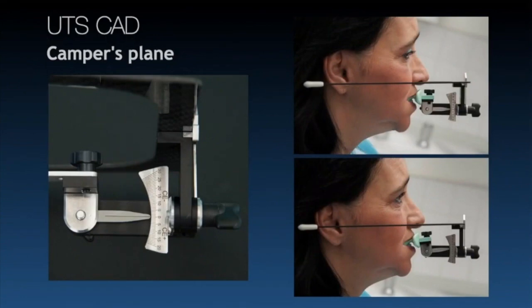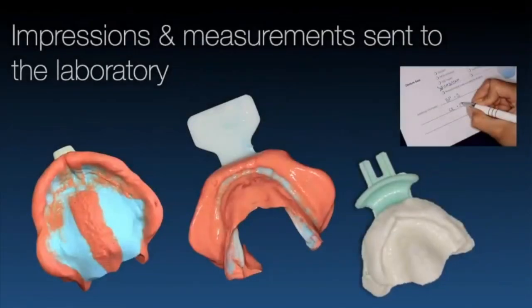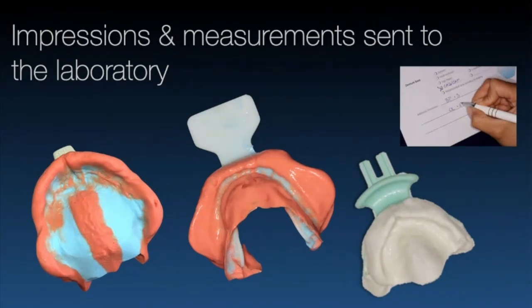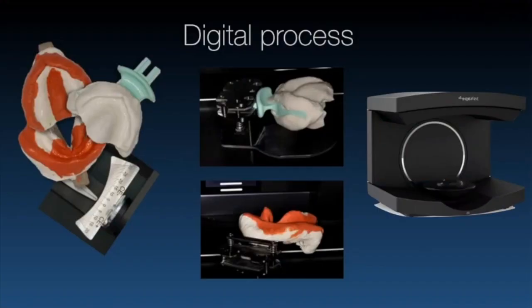We record whatever readings appear, because the software — if we choose to use the UTS card — will need those readings to establish the starting point for the occlusal plane. It's a cool little piece of carbon fiber kit. At the end of the first appointment we have upper and lower primary impressions, a centric tray recording, and the UTS card readings, all going back to the lab.